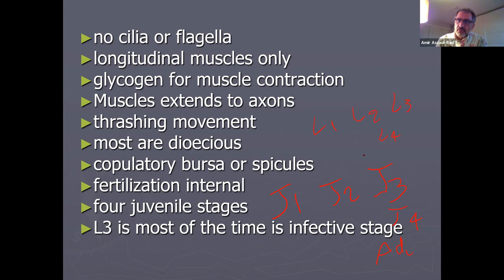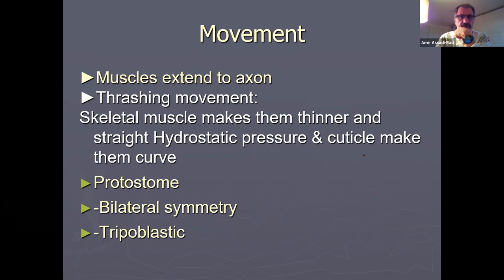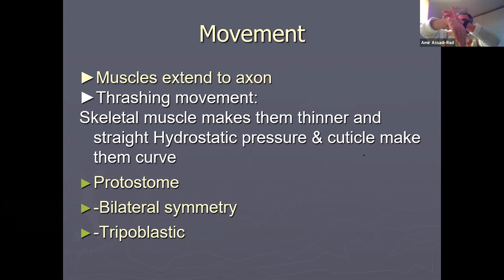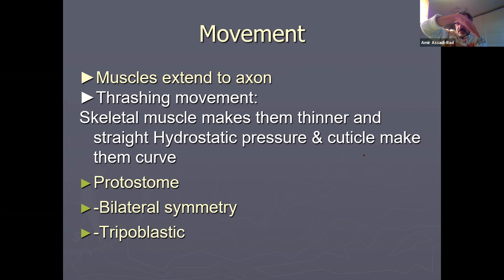Some species are viviparous — the filarial ones give birth to live young. Thrashing movement works like this: skeletal muscles make the animal thin and straight, while hydrostatic pressure and the cuticle make it curve. The animal curves and then straightens repeatedly — that is thrashing movement.